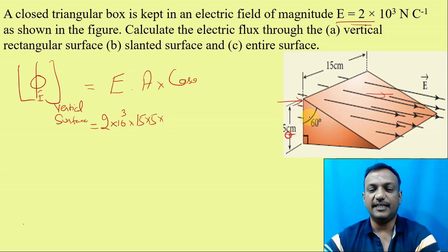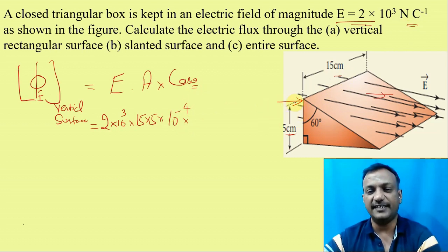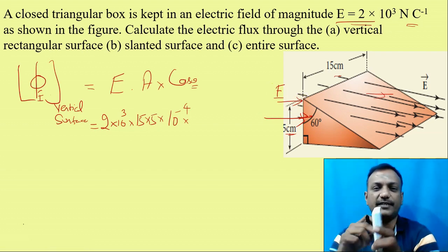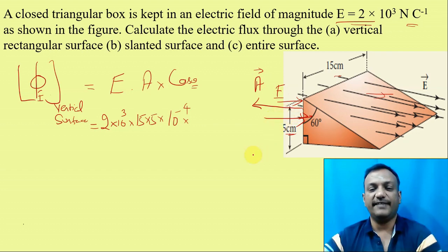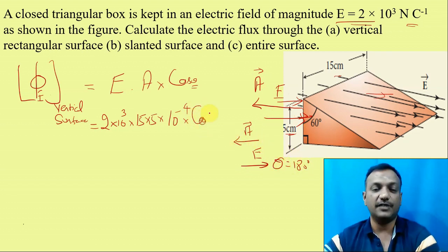The area is 15 into 5 centimeters, which is 10 to the power minus 4 in meters squared. Now theta is very important. The electric field is acting in a certain direction on the surface. I draw a perpendicular — the surface area vector. The E vector and A vector are acting in the opposite direction, so the value of theta is 180 degrees. Cos 180 is minus 1.